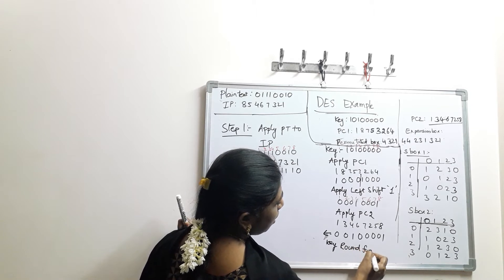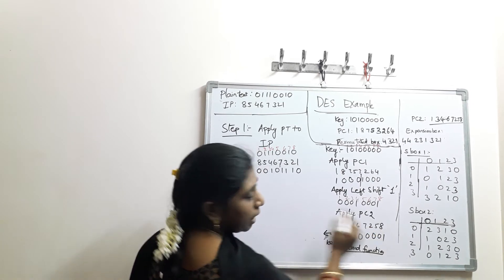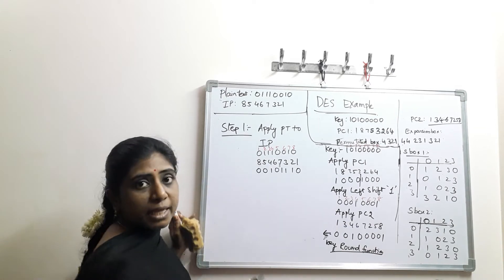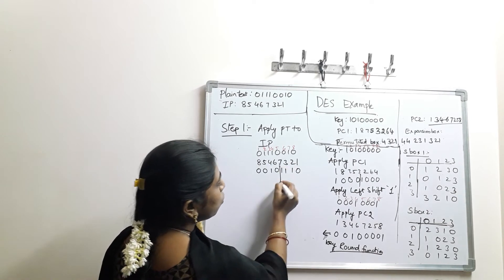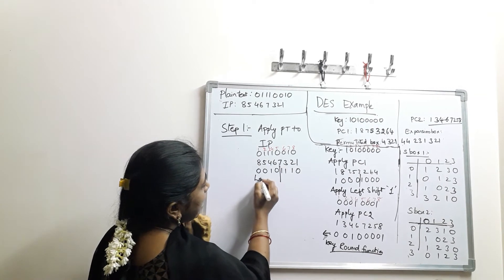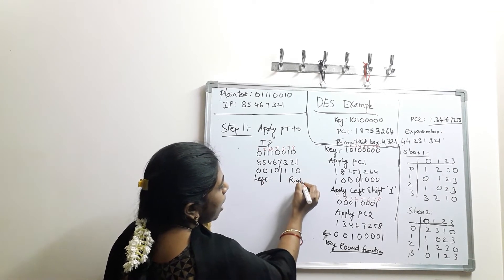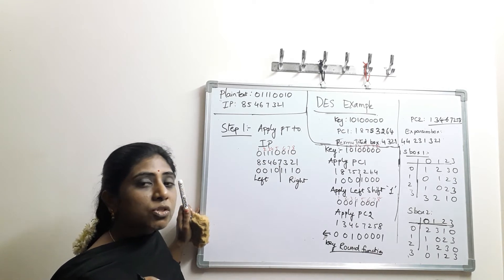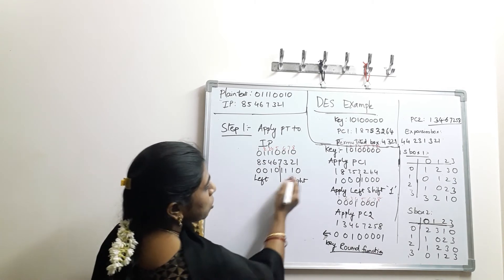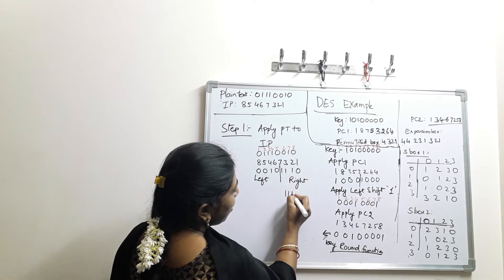In the round function, we apply these key values. The initial permutation output is divided into 2 halves — a left half and a right half. We apply the right half of the bits to the round function. The right half bits are 1, 1, 1, 0.